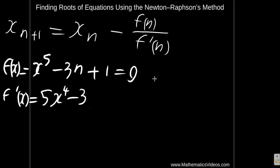We looked in a previous video at a solution for x to the 5th, well that should be x to the 5th minus 3x plus 1 equals 0, and we found it.